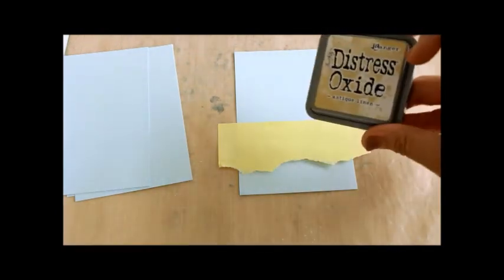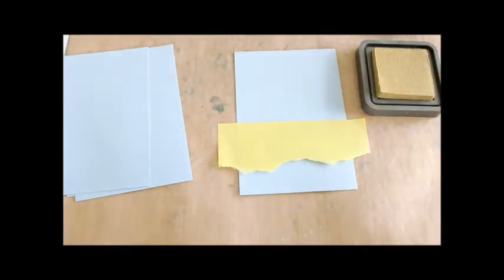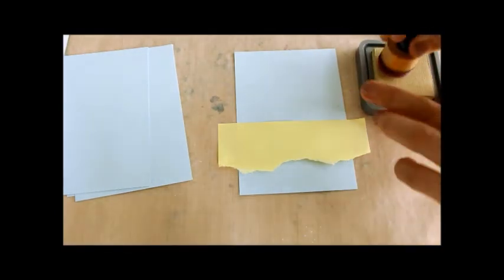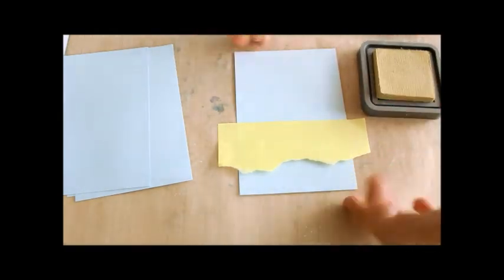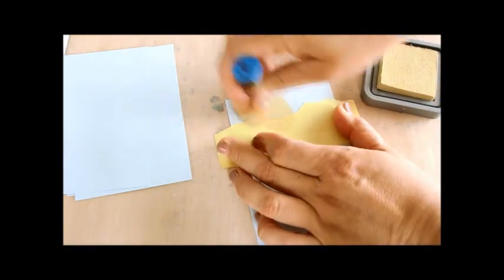I started by tearing a post-it note to create a rough edge and sponging some Antique Linen Distress Oxide down from it. This will be the sand at the bottom of my underwater scene.